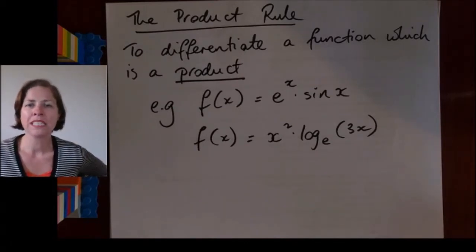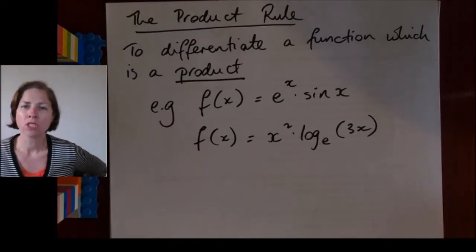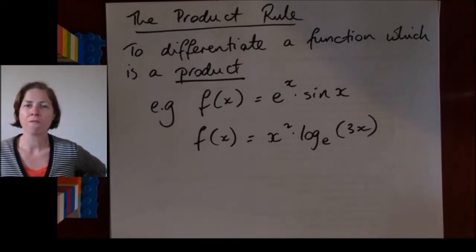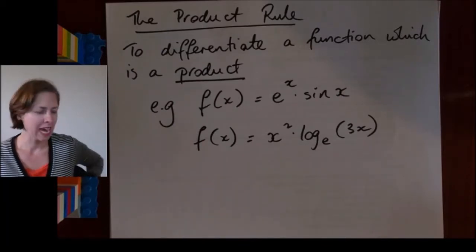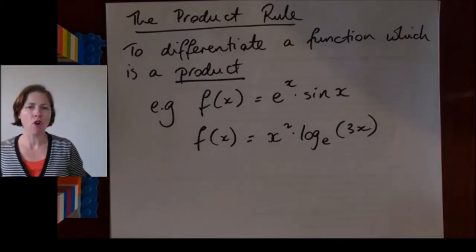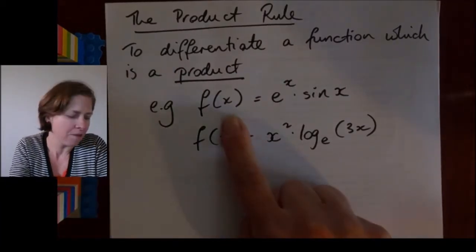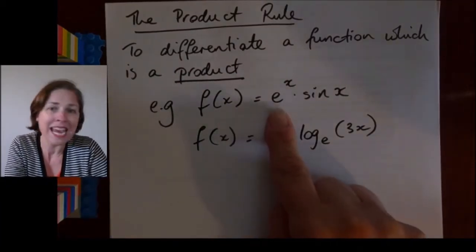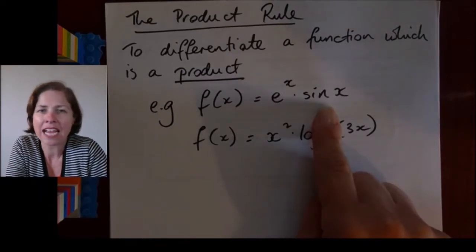The product rule is something that we use when we have a function which has been created by multiplying together two other functions - remembering that the word 'product' means multiplication. I've given you two examples here. In the first one, f(x) equals e to the power of x times sin(x).